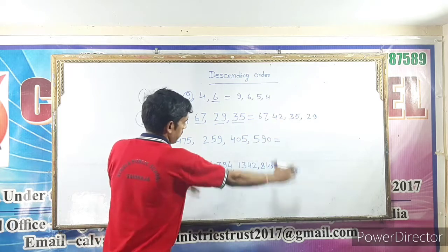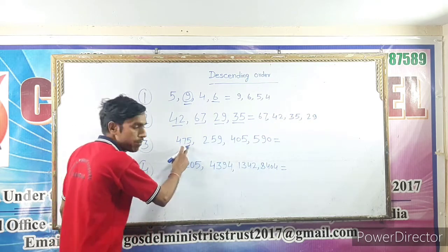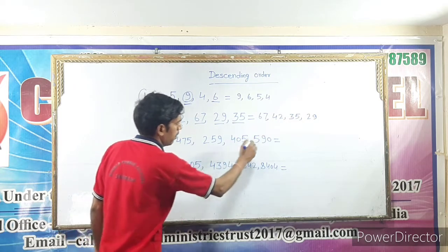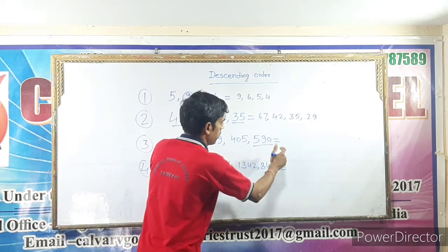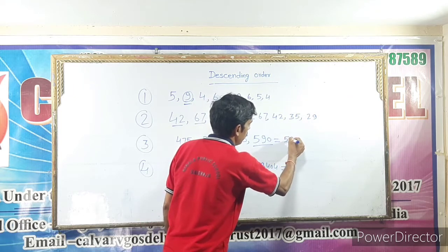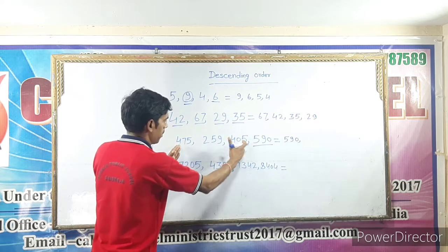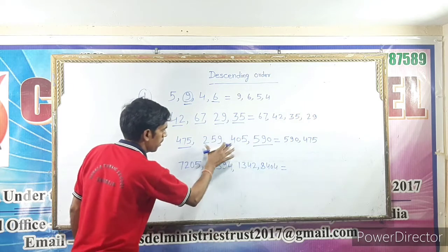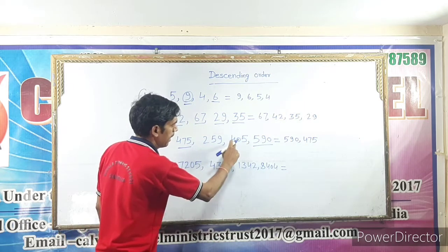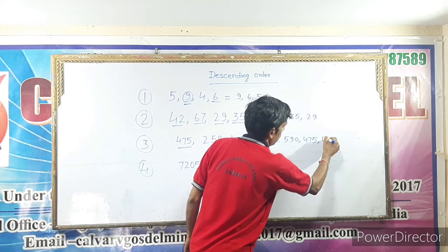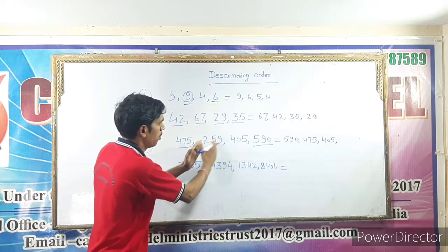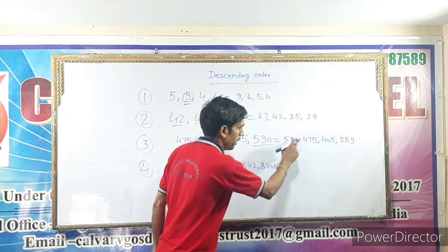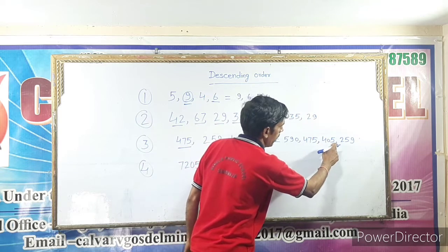Now we have three-digit numbers: 475, 259, 405, 590. The greatest number is 590, so we write that first. Next, the greatest of the remaining numbers is 475. Then 405. And last, the smallest number is 259. So in descending order: 590, 475, 405, and 259.